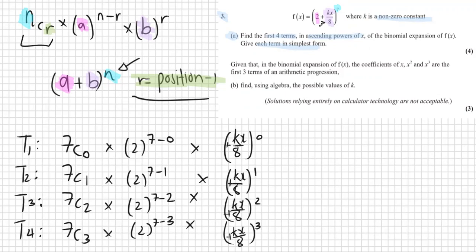Now we can simplify each term. 7C0, anything C0, is 1. 7C1, or anything C1, is just the number itself, so 7. Then 7C2 is 21. And 7C3, putting it into the calculator, is 35.